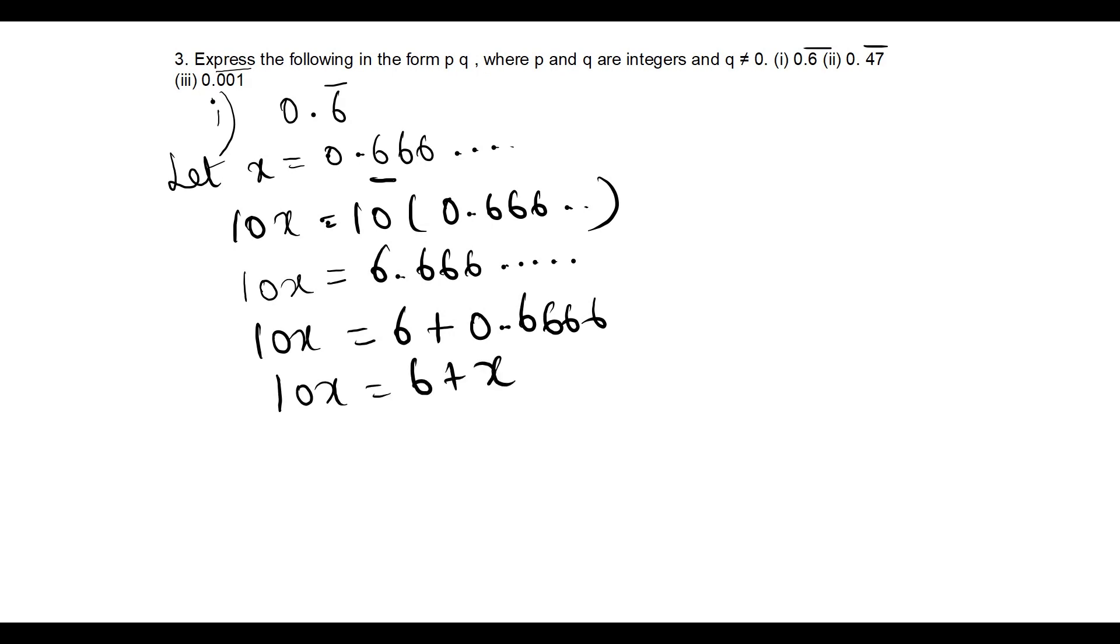So 10x equals 6 plus x. Take x to the other side, 10 minus x is 9x. 9x equals 6, so x equals 6 by 9 which equals 2 by 3.